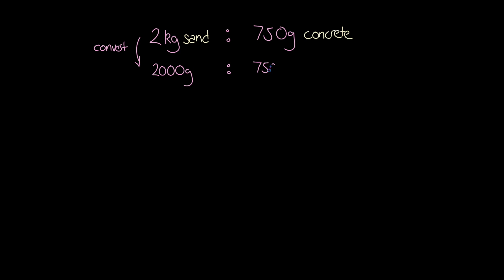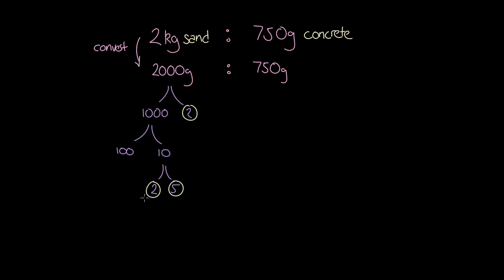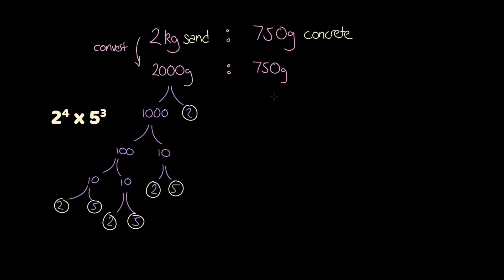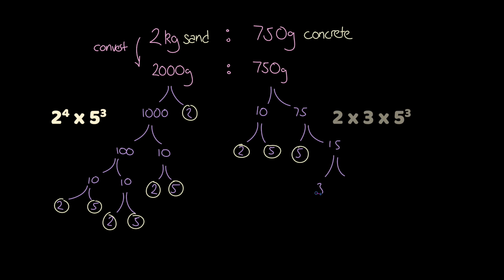Then we can begin to split 2000 into its prime factors. 2000 can be divided by 2, giving us our first prime factor. 1000 can be split into 100 times 10. This 10 gives us 2 more prime factors of 2 and 5. Similarly, we can split 100 into 2 tens, which then both divide down into 2 and 5. So our final prime factorization for 2000 is 2 to the 4th power times 5 cubed. Running through the same process for 750 gives us prime factors of 2 times 3 times 5 cubed.